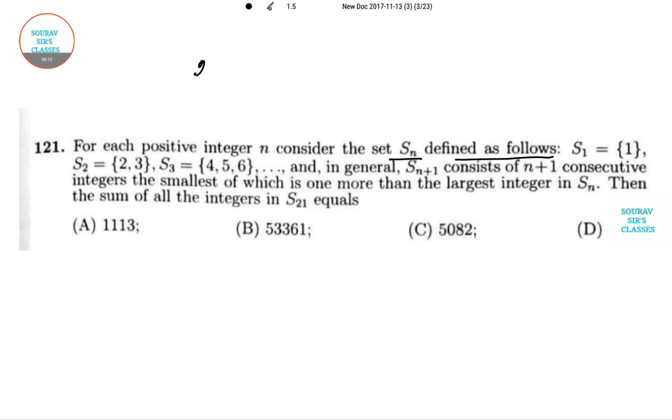If S_{n+1} consists of n+1 consecutive integers, the smallest of which is one more than the largest integer. For example, S_3 ends at 6, so S_4 starts with 7. The sum of integers in S_21.